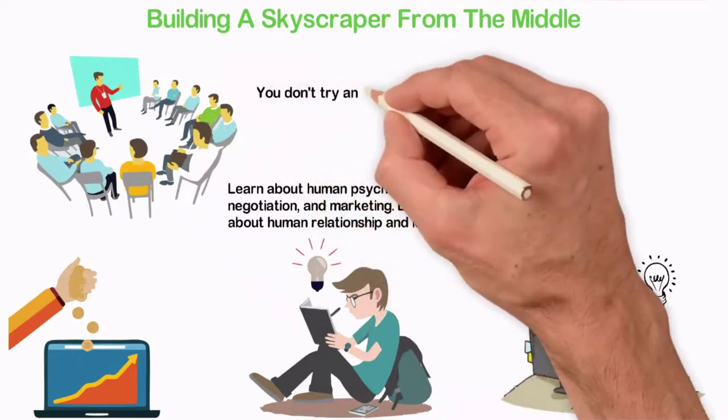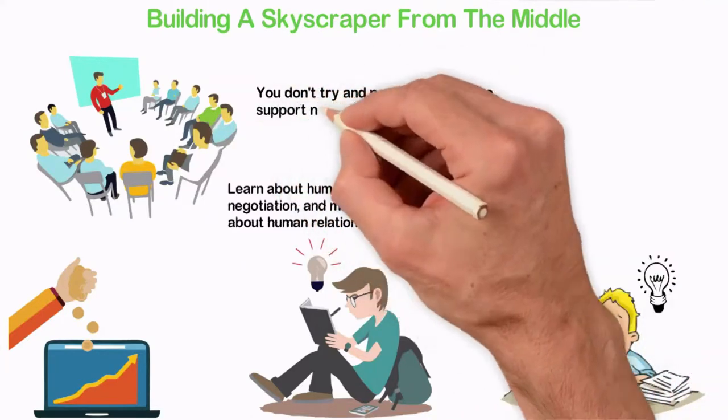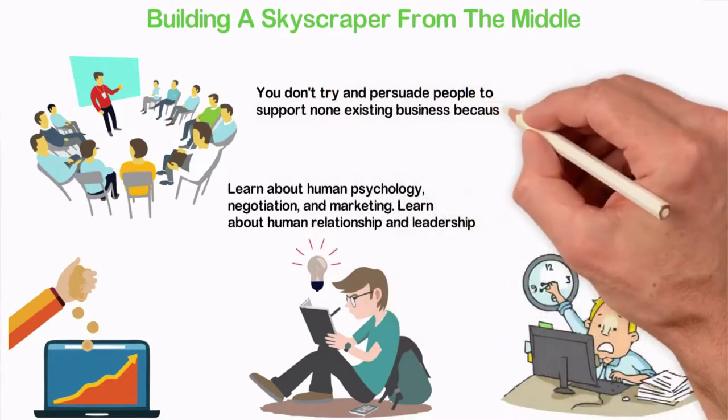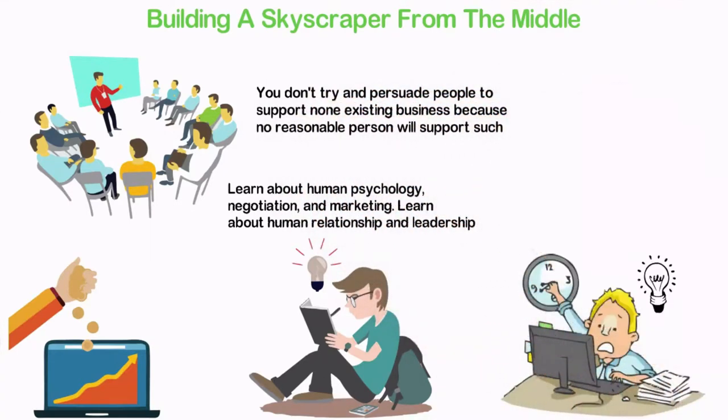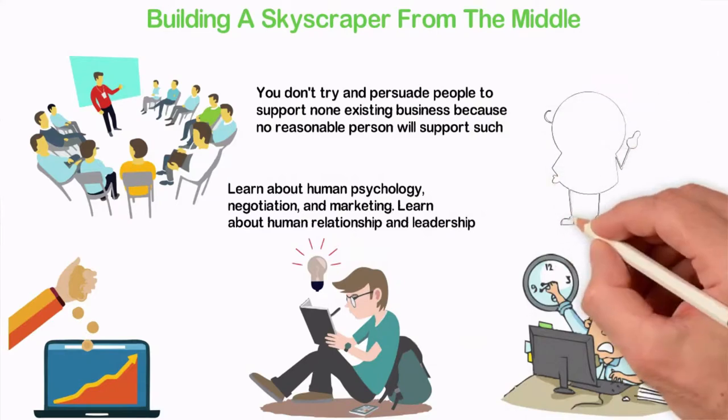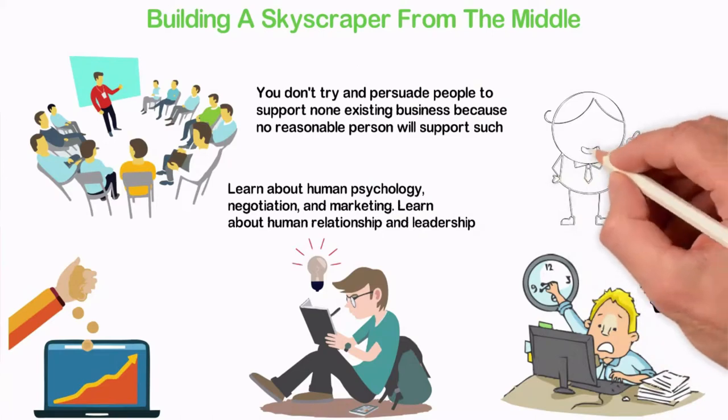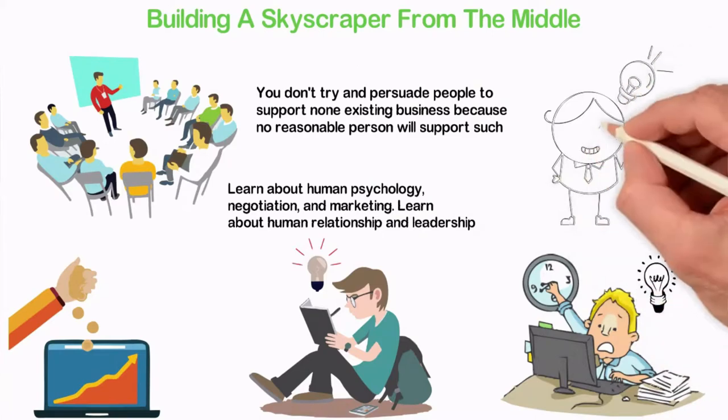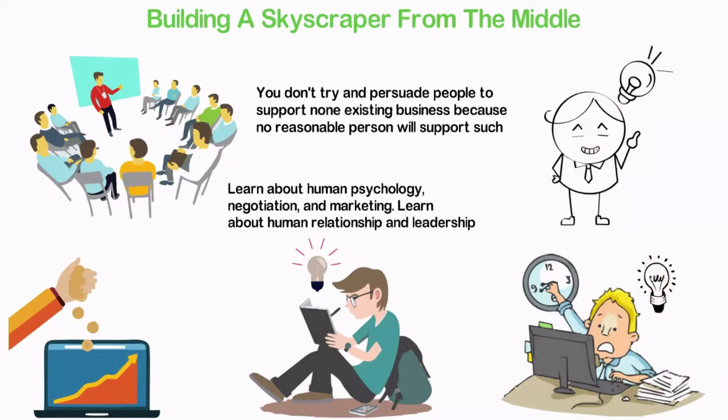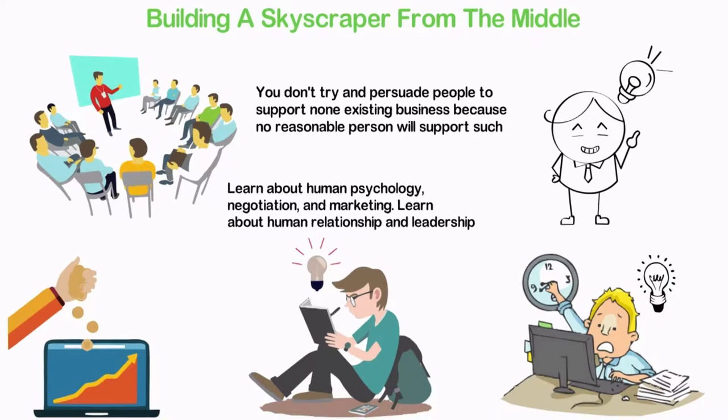Please note, you don't try and persuade people to support non-existing businesses because no reasonable person will support such. You can only get people to support you with 100,000 blocks after you've already gotten 100 blocks on your own because your action is the sign that you have faith in yourself. If you can't figure out how to labor hard to get 100 blocks on your own, nobody will support you to get 100,000 blocks you need to build that tall building.